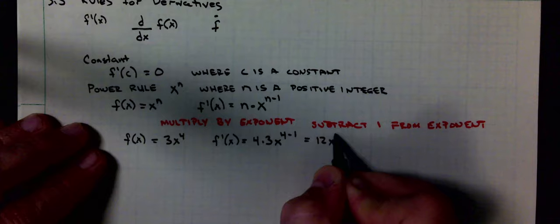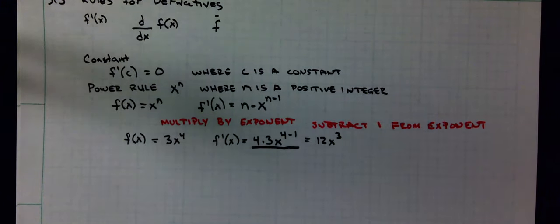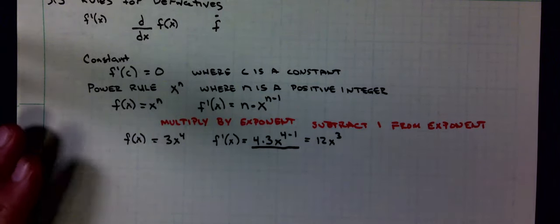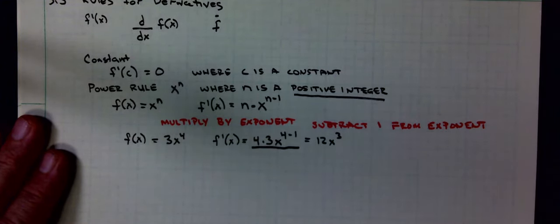So I do not need to see intermediate steps. Go directly to the derivative, like 12x cubed. Again, right now this is working with positive integer exponents.